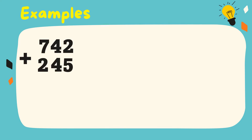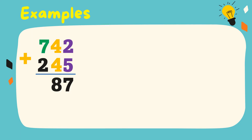742 plus 245. In adding whole numbers, we're going to align the digits in each number, then add from right to left. 2 plus 5 is equal to 7, 4 plus 4 is equal to 8, 7 plus 2 is equal to 9.